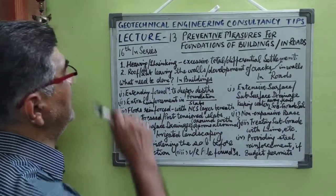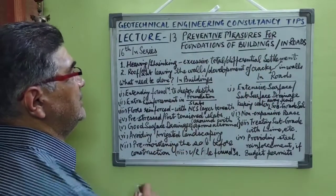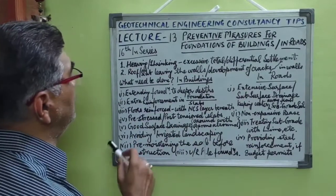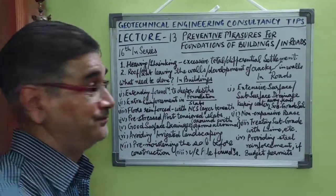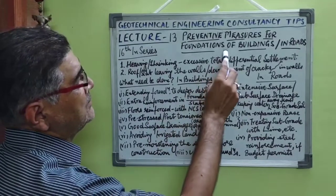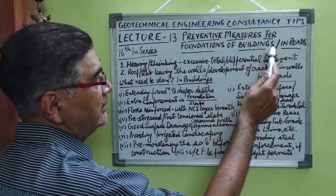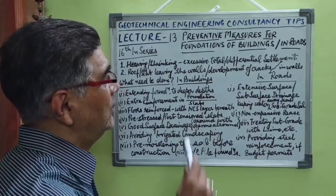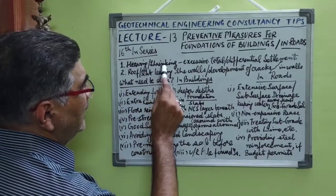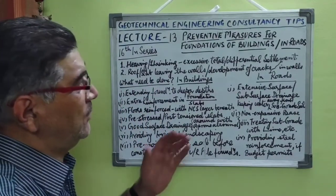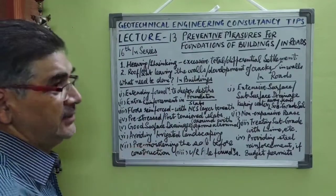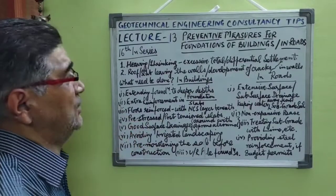Welcome, real friends, again to my channel Geotechnical Engineering Consultancy Tips. This lecture is numbered as lecture 13, although this is lecture 16 in the series. The subject topic of this lecture is preventive measures for foundations of buildings and for roads during their construction. The properties and detrimental effects of black cotton soils were discussed in my previous lecture, which was the 15th in the series.